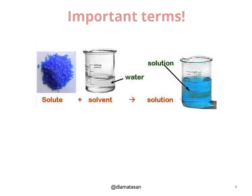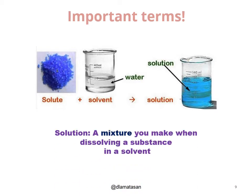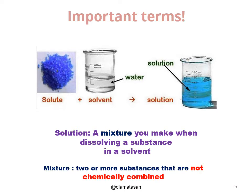Important terms you need to know before we proceed with the techniques. First, we have solute, which is a substance that we can dissolve in a solvent — for instance, water — to produce a solution. A solution is a mixture you make when dissolving a substance in a solvent. Bear in mind that a mixture is a combination of two or more substances that are not chemically combined.